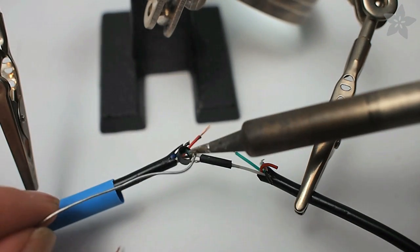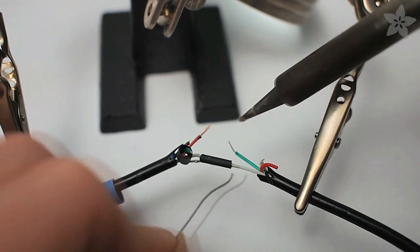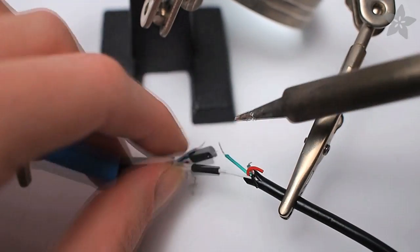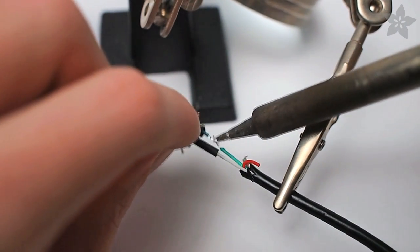The method I like to use for splicing these wires is to tin each end with a little bit of solder, and then position them near each other and remelt that solder so it flows between the two wires.